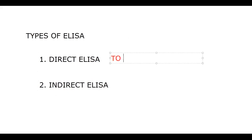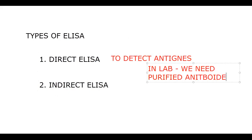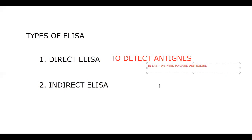In case of direct ELISA, it is used to detect antigens. In the lab, we need to carry purified antibodies. When you are searching for a patient's antigens, you need purified antibodies. Indirect ELISA is used to detect antibodies in the patient.